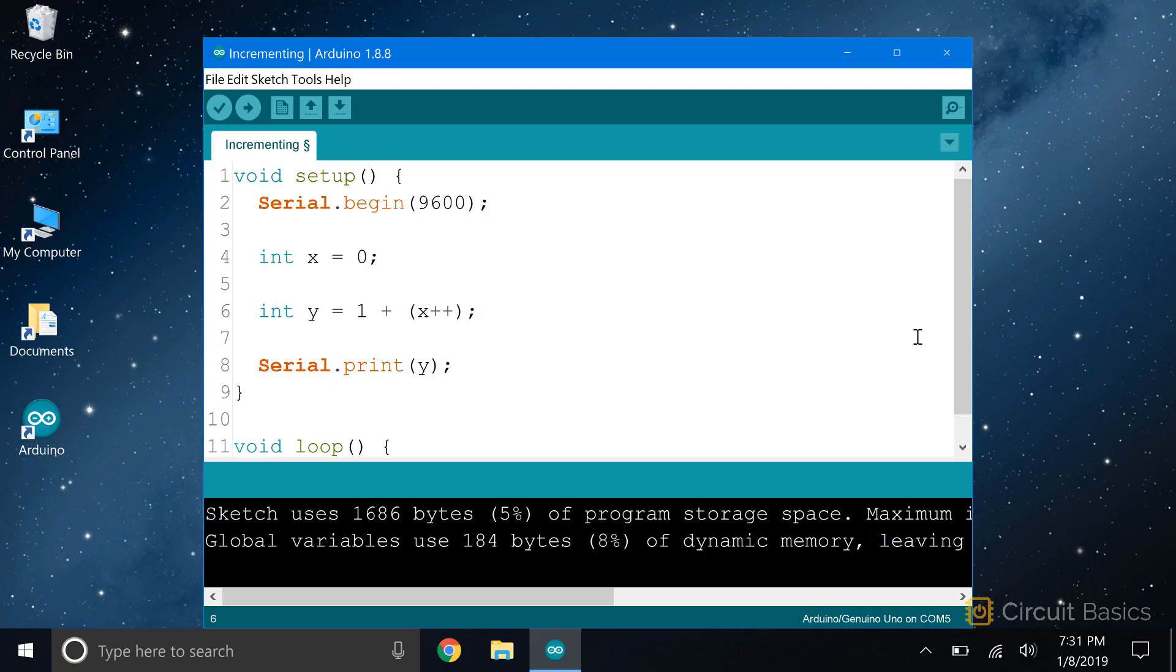So look at this sketch. I declare an int variable called x and set it equal to 0. Then I declare another int variable called y and set it equal to 1 plus x plus plus. Then I serial print y.